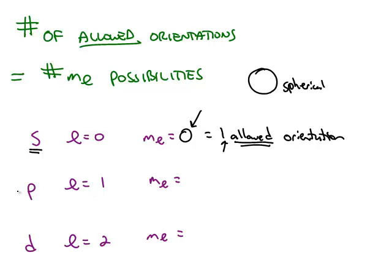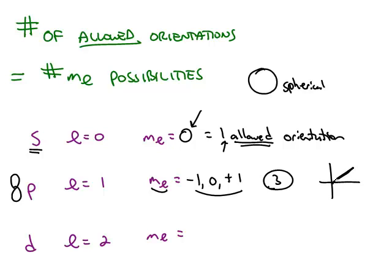If you compare that to a p orbital, the p orbital has a dumbbell shape. You could take this dumbbell shape and, starting from this position, rotate it any number of degrees you want — so it's an infinite number of orientations. But the number of allowed orientations depends on how many m sub l values you have. Remember, m sub l always goes from negative l up to zero up to positive l, so it's going to be negative one, zero, or positive one. That gives you three allowed orientations, which match up with a three-dimensional coordinate system where you have an x-axis, a y-axis, and a z-axis.